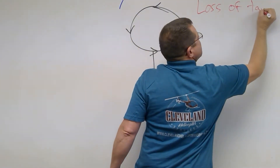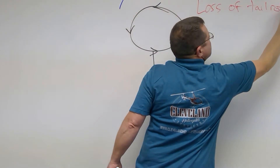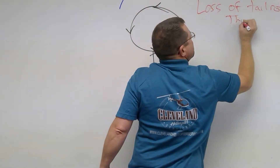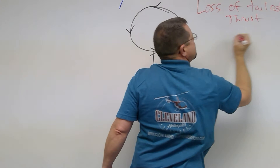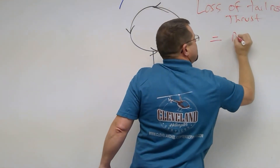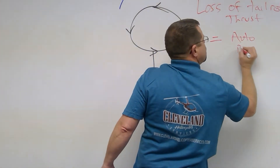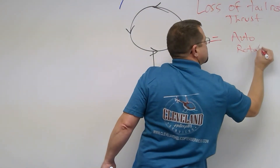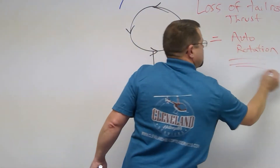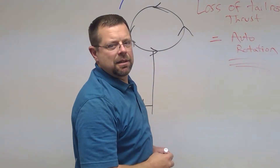Loss of tail rotor thrust — autorotation to the ground. That is the only way to land it in the field.